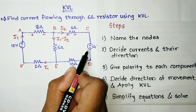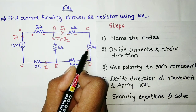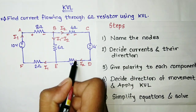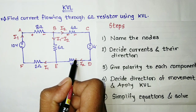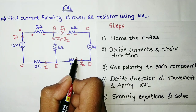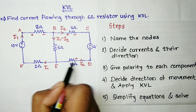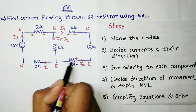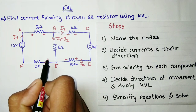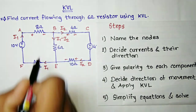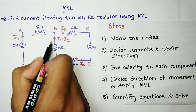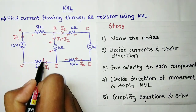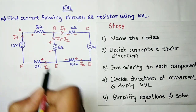Do not give polarity to the voltage sources because they already have polarities. We have to give polarity to the passive components only. Here it is positive and here it will be negative. The current I1 minus I2 is flowing in the downward direction, therefore it is positive here and negative there.